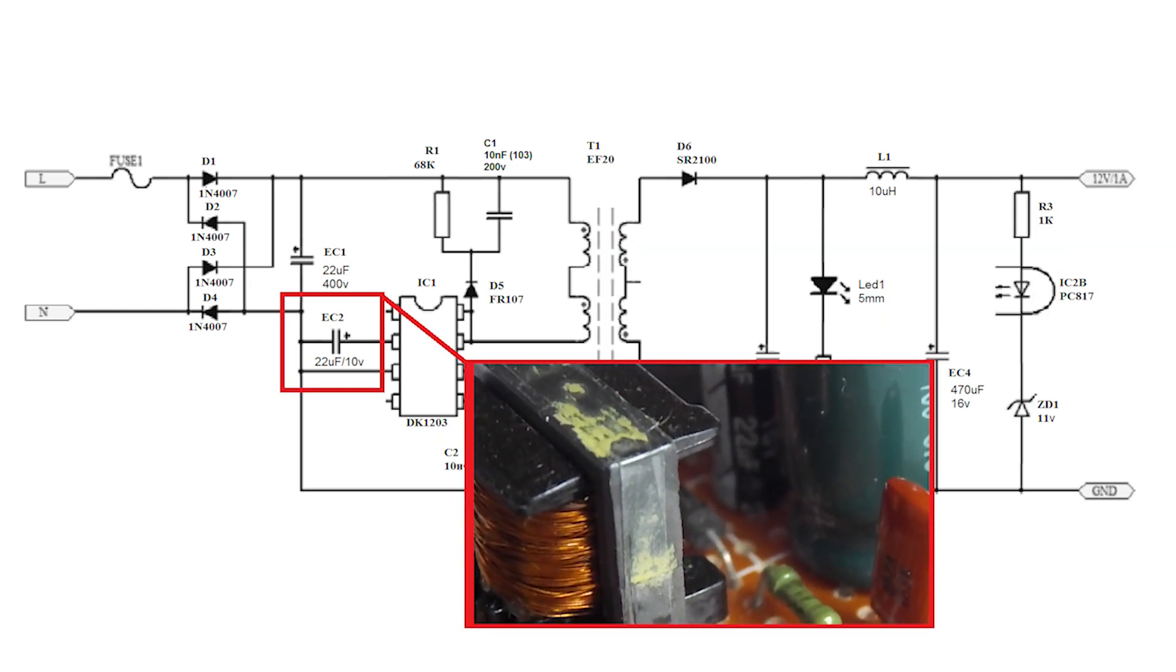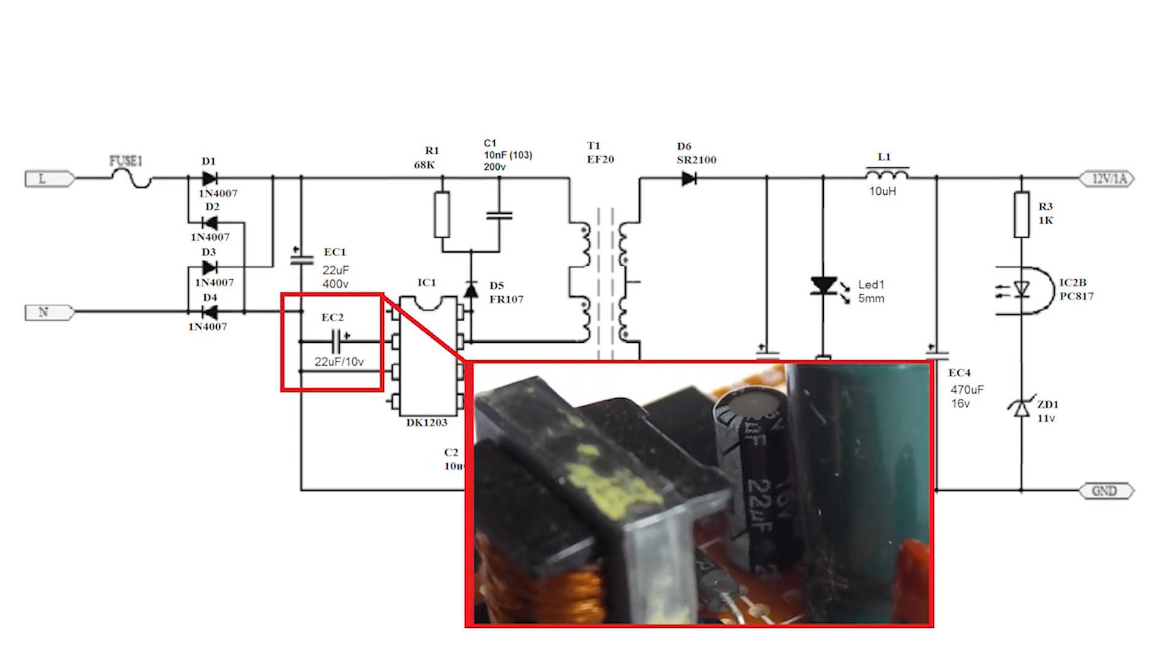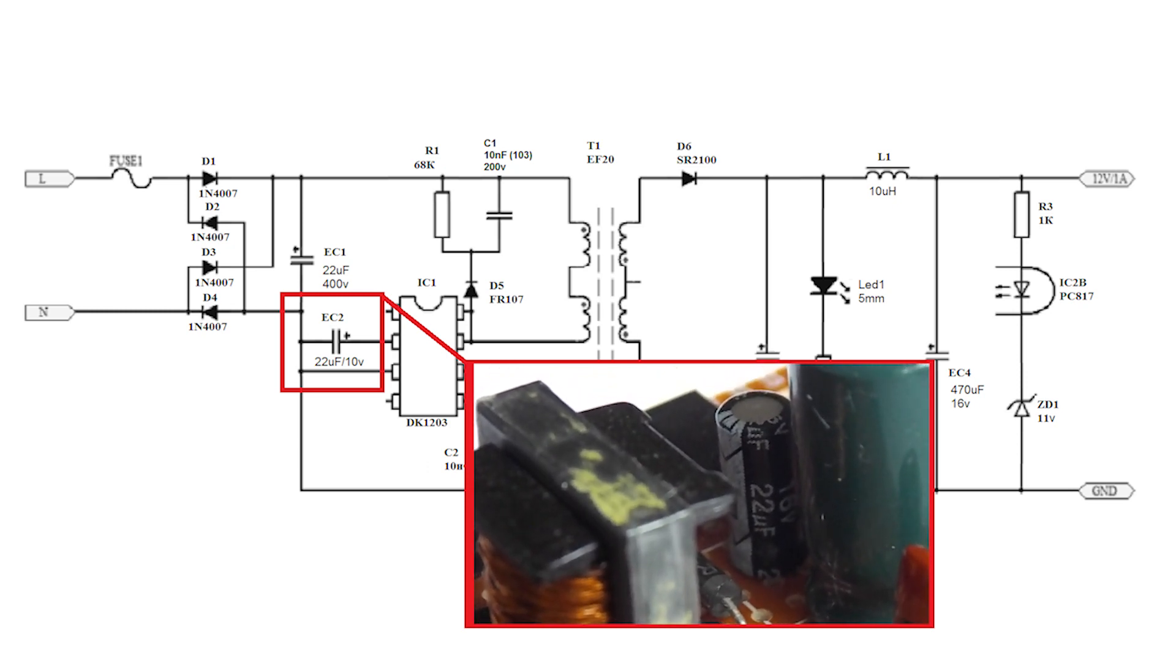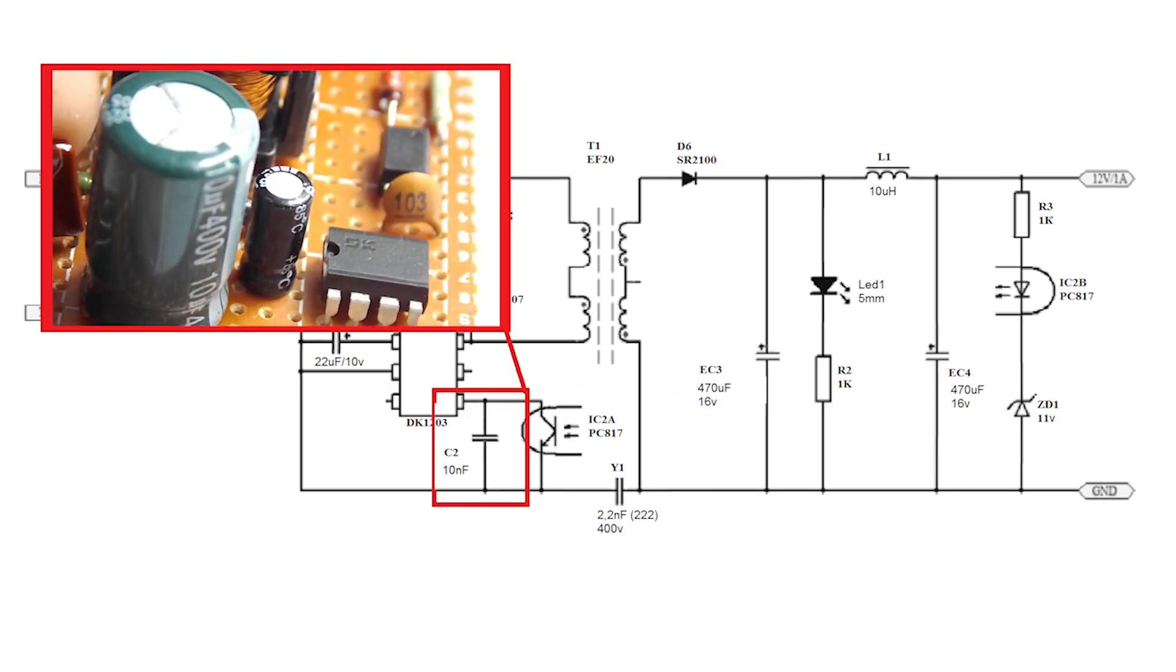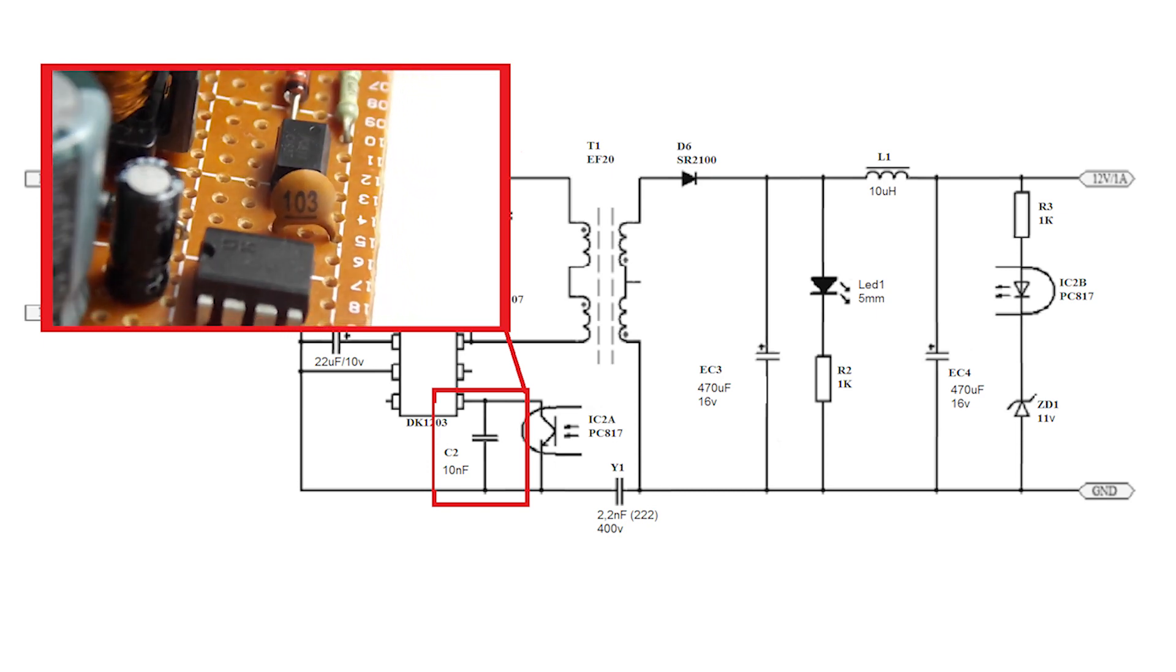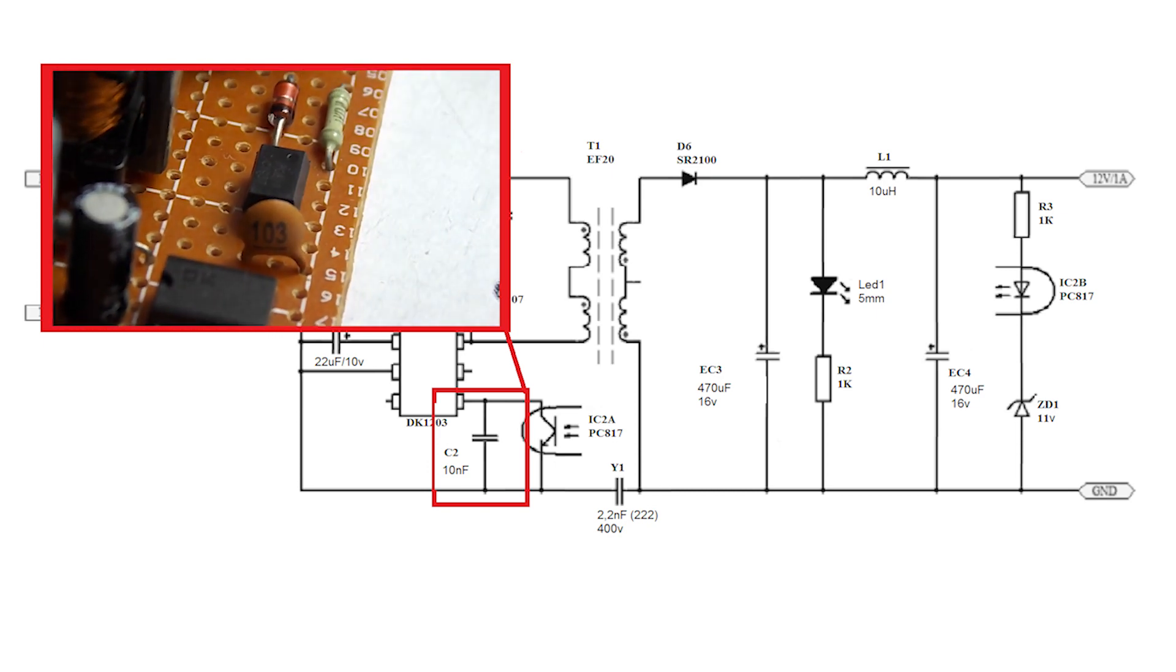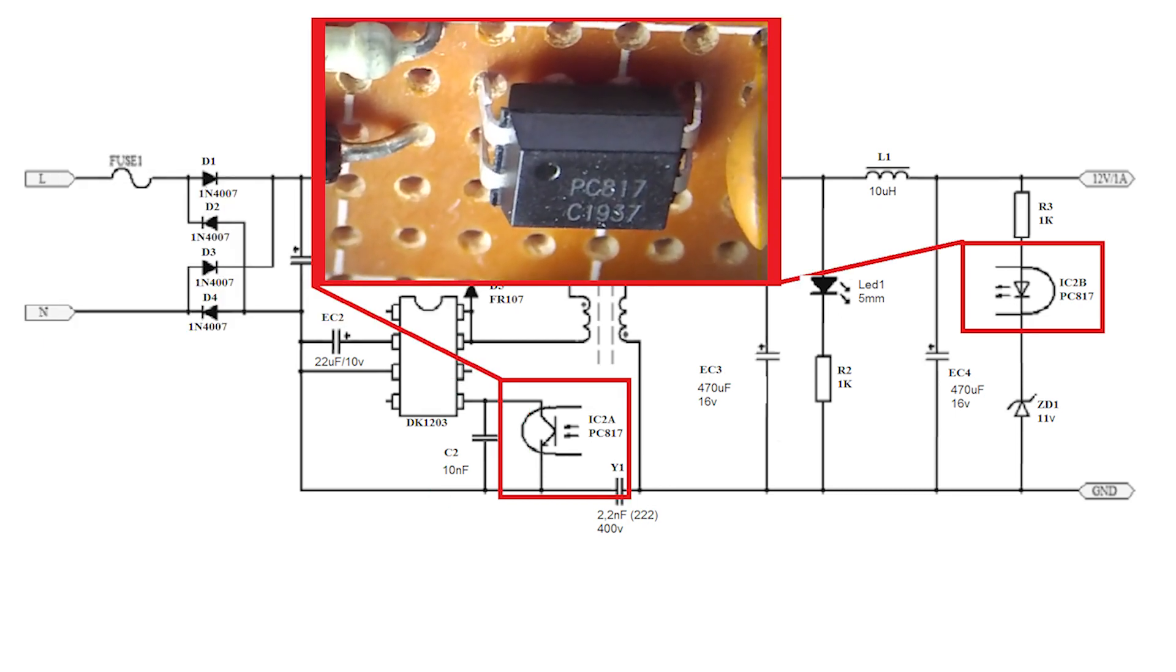EC2 is a 22 microfarad 10 volt electrolytic capacitor. Also in the datasheet, it is said that the capacitance can be changed from 10 to 100 microfarads. C2 is a 10 nanofarad capacitor marked 103, suitable for any voltage. IC2A and IC2B is a chip PC817 optocoupler.